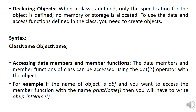For accessing the data members and member functions, you use the dot operator along with the object. For example, if you want to access a function 'printName' inside a class, and 'obj' is the name of the object, then the syntax is obj.printName — that allows you to access the function printName from that class.